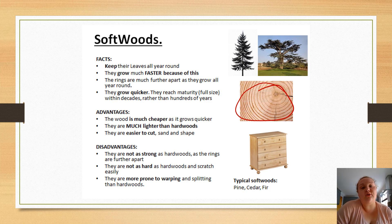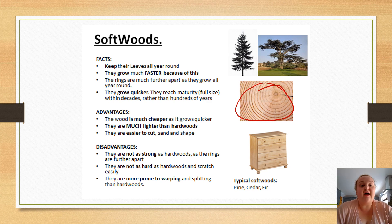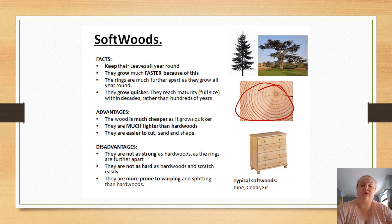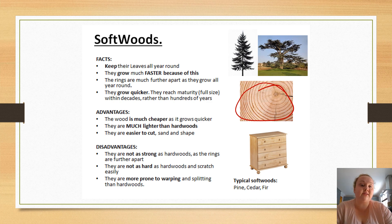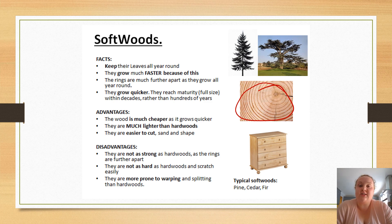Because they grow so quickly, softwoods only take around 30 years to reach adult maturity. Advantages of softwoods are that they are much cheaper to buy — the quick turnaround means you can plant, cut, and sell the wood relatively fast. They are much lighter than hardwoods, so if you need a lightweight product you might want to use a softwood. They are also easier to cut, shape, and mold.